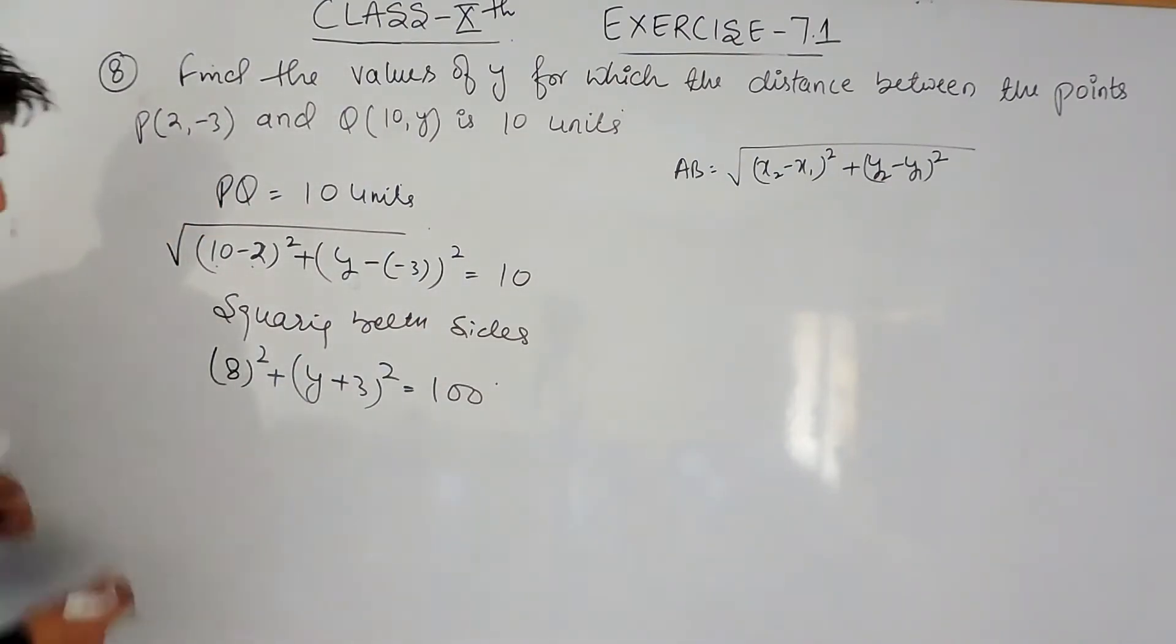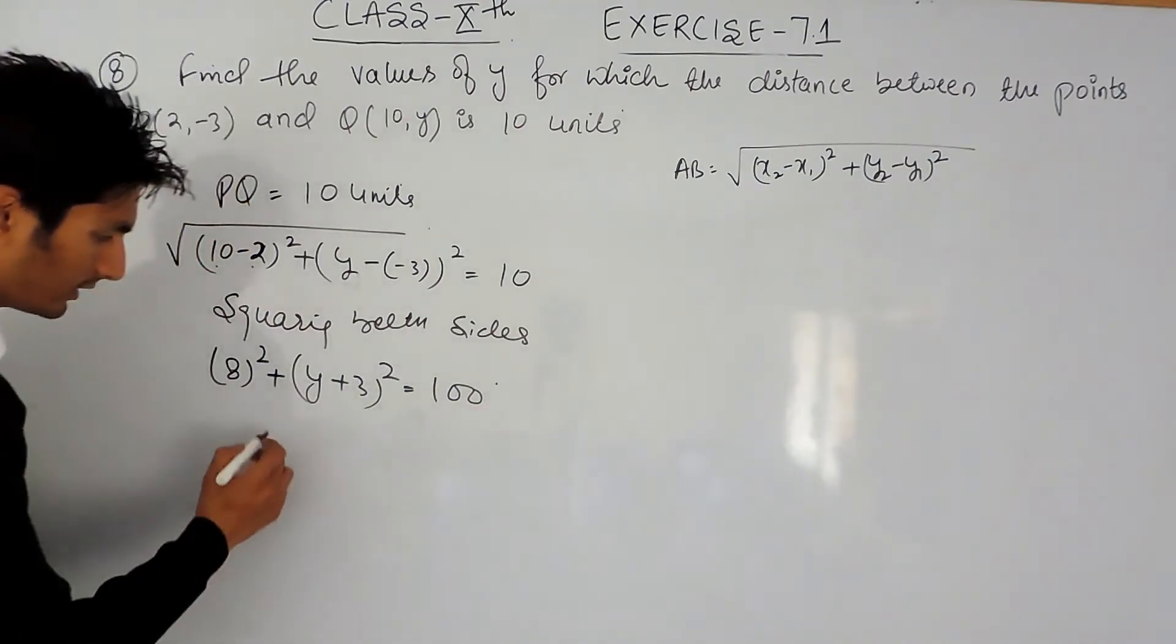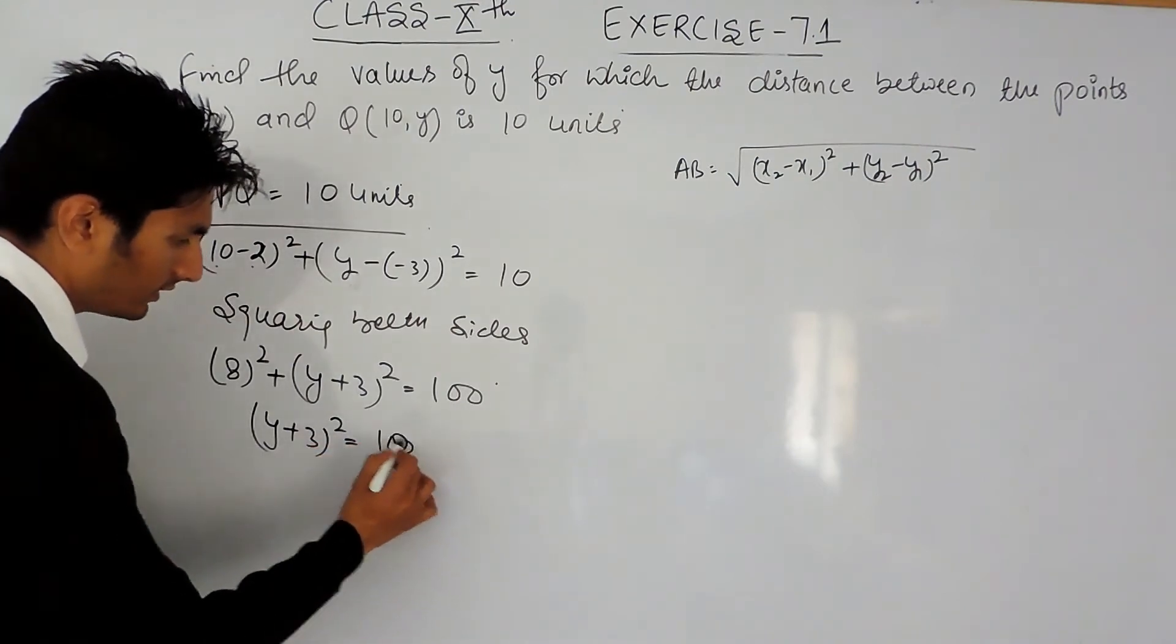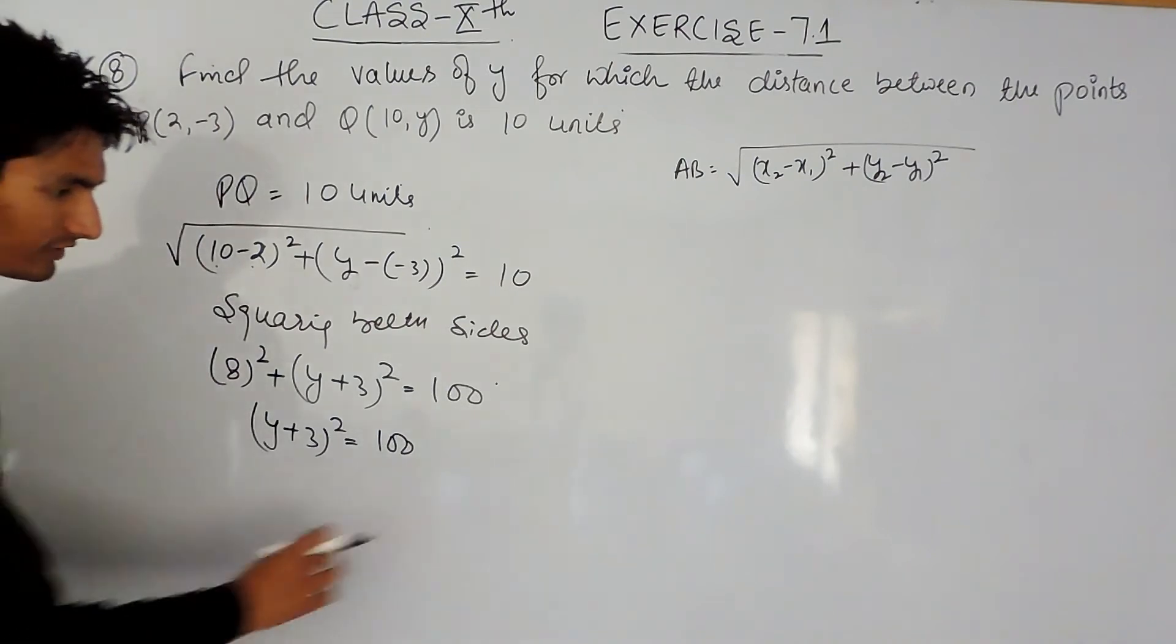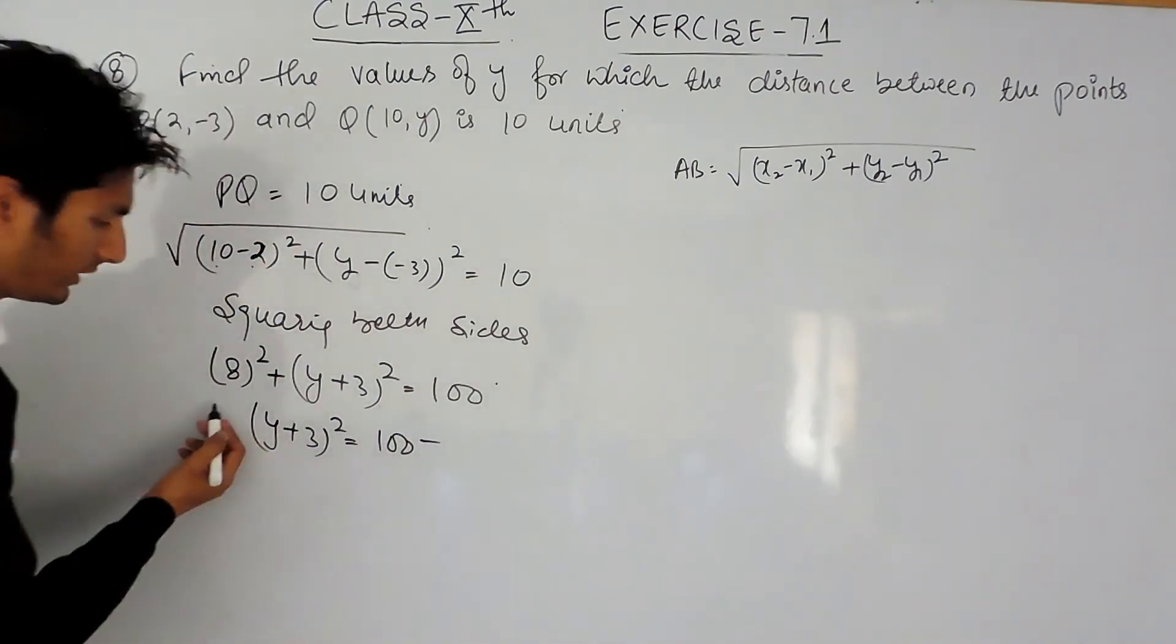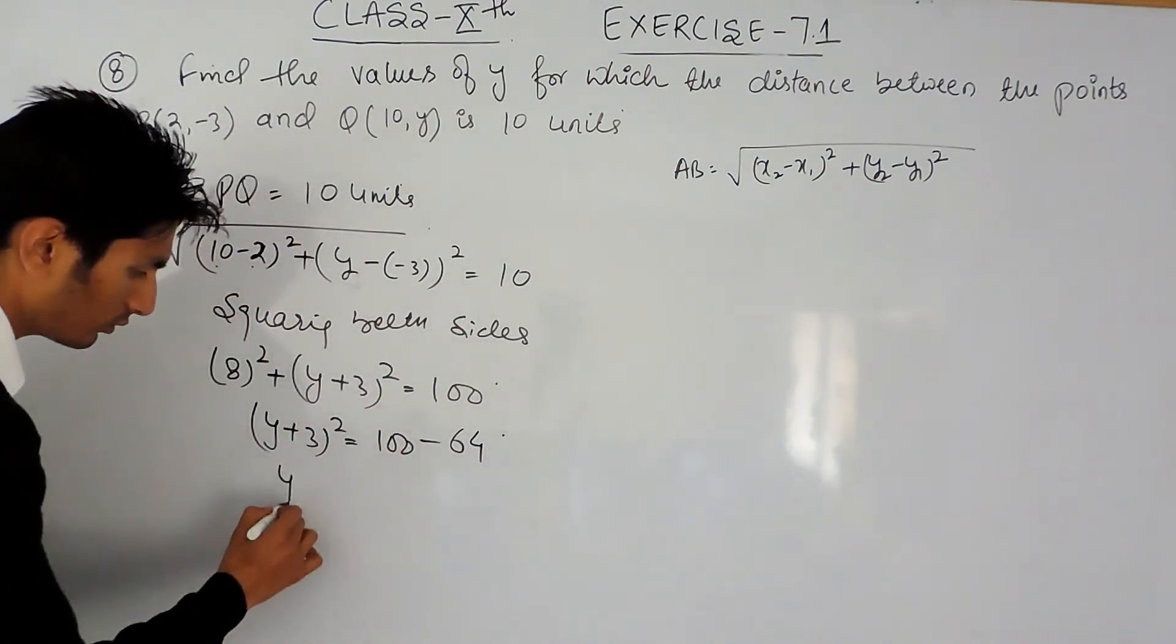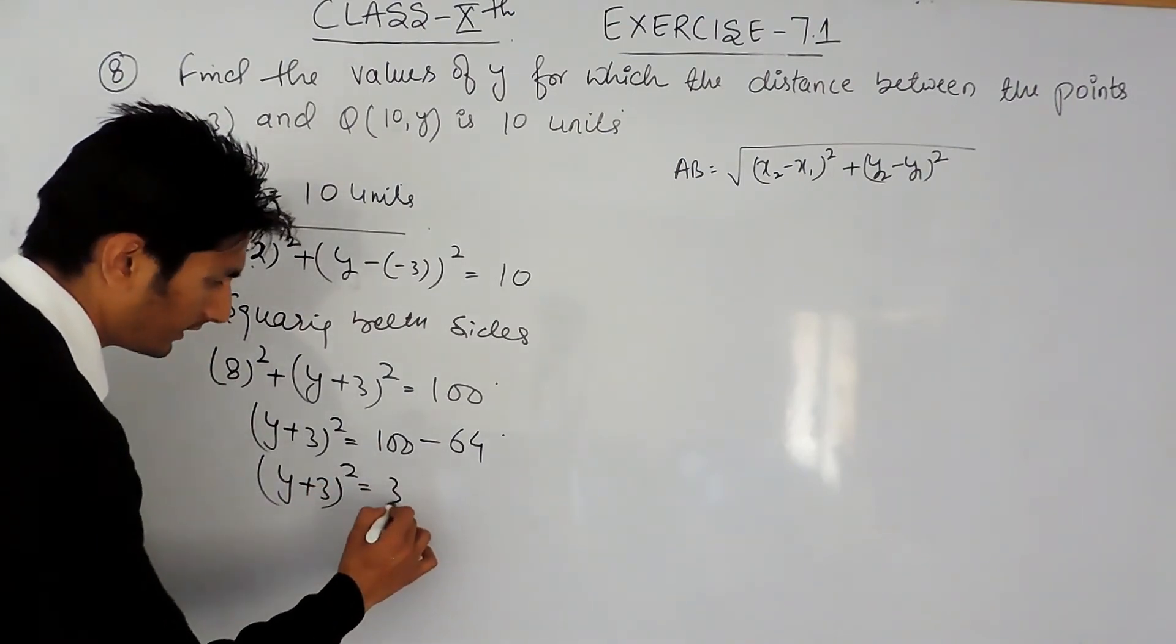For solving this, I can shift this value to this side, so it should be y plus 3 whole square will be equal to 100. This is 8 square shifted to that side, which will be minus 8 square. 8 square is 64, so y plus 3 whole square will be 36.